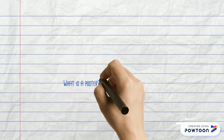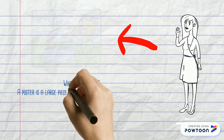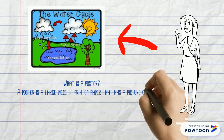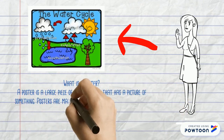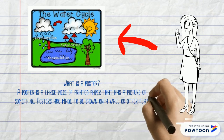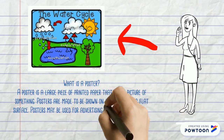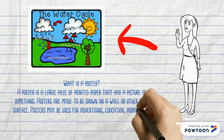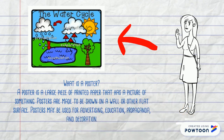What is a poster? A poster is a large piece of printed paper that has a picture of something. Posters are made to be shown on a wall or another flat surface. Posters may be used for advertising, education, propaganda, and decoration.